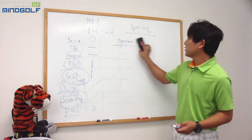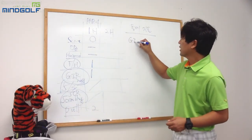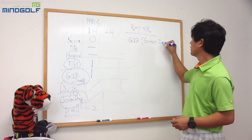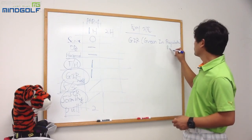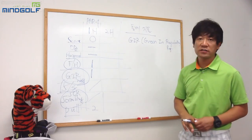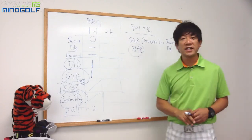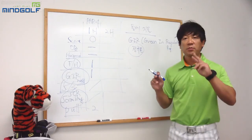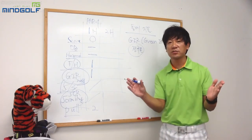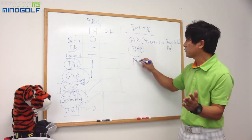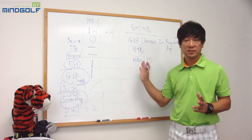먼저 G.I.R.부터 설명해 드릴게요. G.I.R.은 Green in Regulation, 한국말로는 정규온입니다. 정규온이란 퍼팅을 각 홀마다 두 번을 한다는 것을 제외하고 나머지 타수 이내에 그린에 올리는 것입니다. 파3 같은 경우는 퍼트 두 번을 빼면 한 번에 그린에 올리는 것이 정규온입니다.